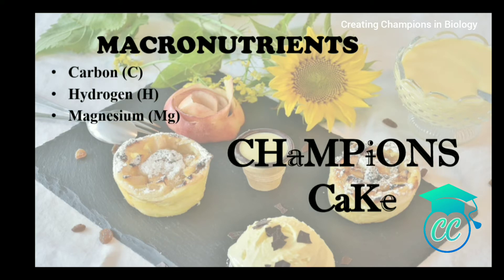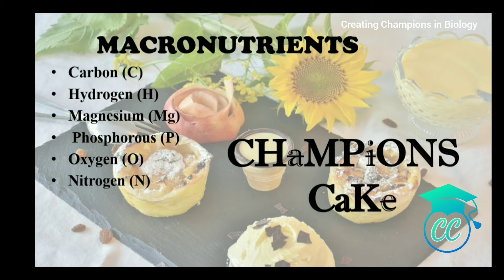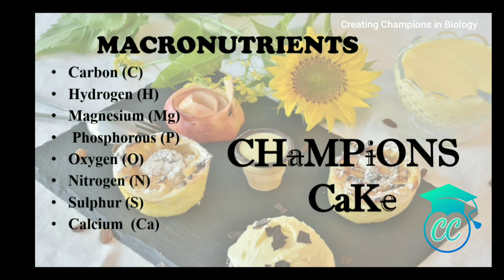M stands for magnesium, P stands for phosphorus, O stands for oxygen, N stands for nitrogen, S stands for sulfur. And for 'cake': CA stands for calcium and K stands for potassium. This is a very easy and simplified trick to remember the macronutrients.